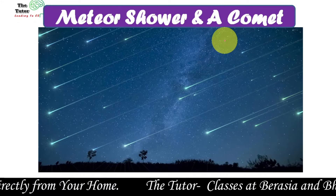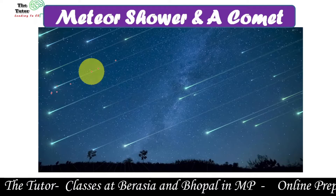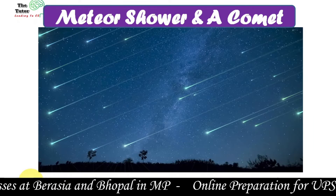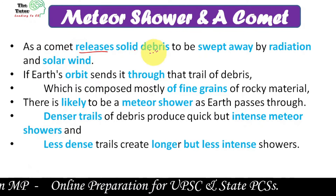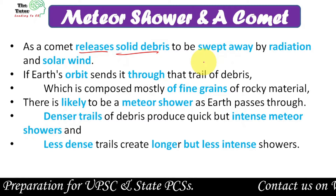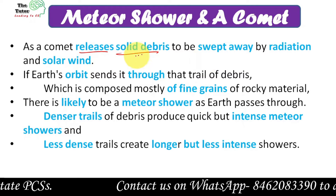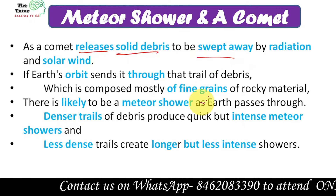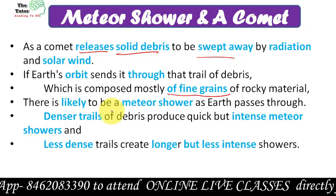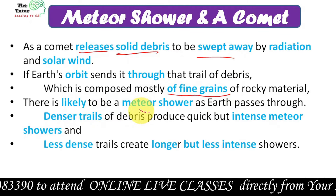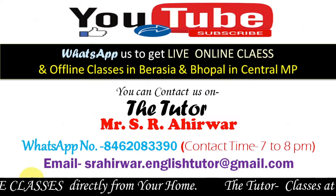Whenever a comet comes close to the Earth, our Earth has a very bright and colorful sky — this happens because of a meteor shower. As a comet releases solid debris, and if our Earth's orbit crosses the comet's orbit, the solid debris enters into our Earth's atmosphere. Because of friction, these fine-grain particles start to vaporize and burn, and we see a meteor shower. It is very beautiful and really very amazing to see.